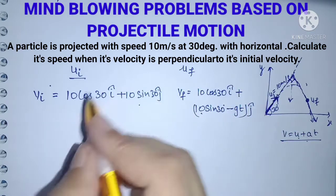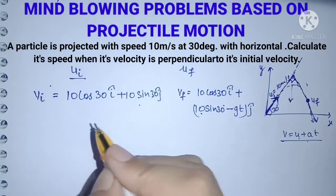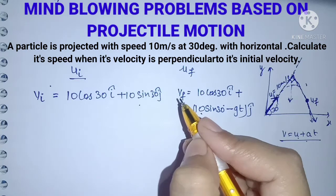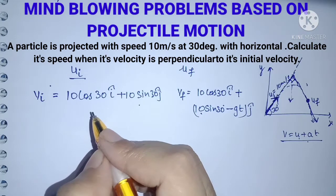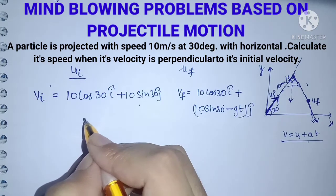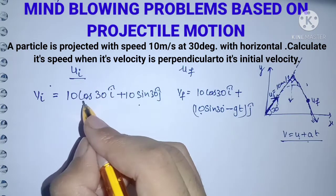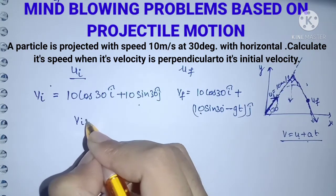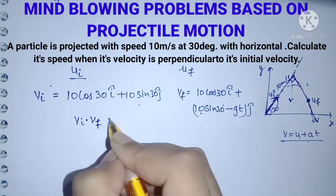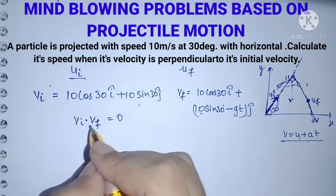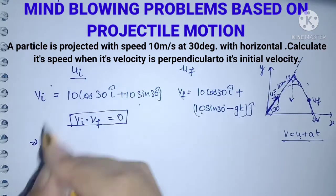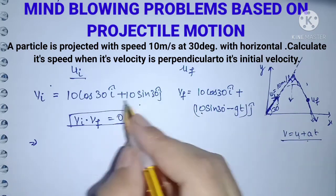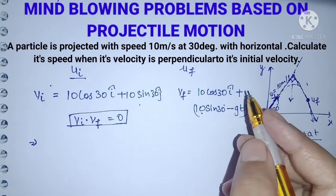Now, what is the condition for initial and final velocity to be perpendicular? We know that if two quantities are perpendicular, their dot product is zero. So we can write: v_initial · v_final = 0. We use this condition and take the dot product of the two velocity vectors.